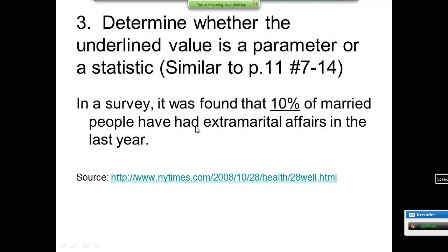It says in a survey it's found that 10% of married people have had extramarital affairs in the last year. Again, the implication is that of all married people, 10% of them have had affairs. So this is a sample. Again, if it refers to a survey or sample, then it's a statistic. If it's a population, it's a parameter.